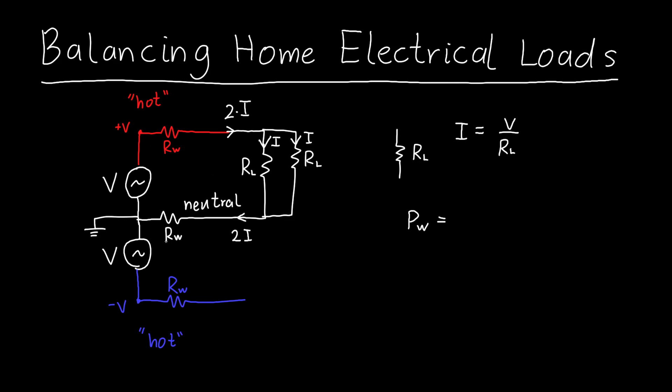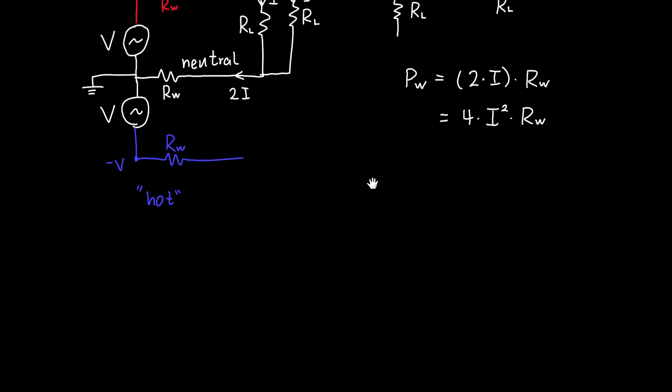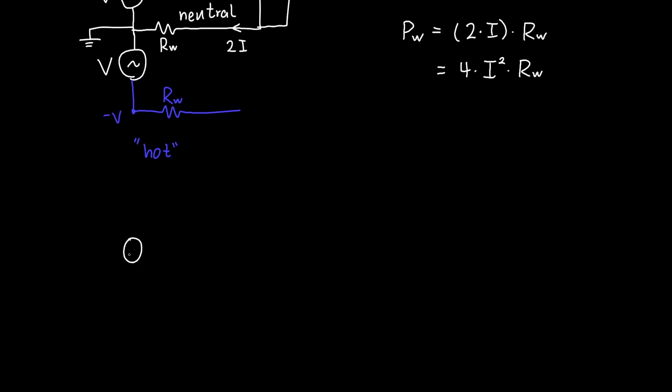If we wanted to calculate the power dissipated by the wire—in this case the top hot wire as well as the bottom neutral wire—we know it's just the current flowing through times the wire resistance, which here is (2I)² multiplied by RW. So this is 4I² times my wire resistance.